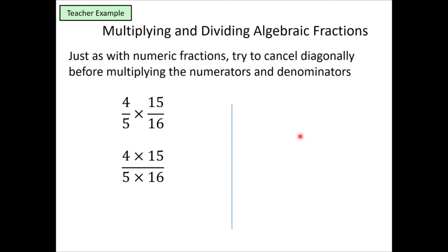This will help us when we're doing the algebraic fractions. Diagonally, the 4 and the 16 will cancel — they both have a highest common factor of 4, so we can divide them both by 4. And by 5, that becomes 1 and 3. So then what I'm left with is 1 times 3 for the numerator and 1 times 4, giving a simplified answer at the end.